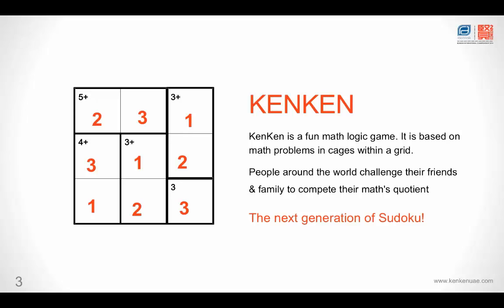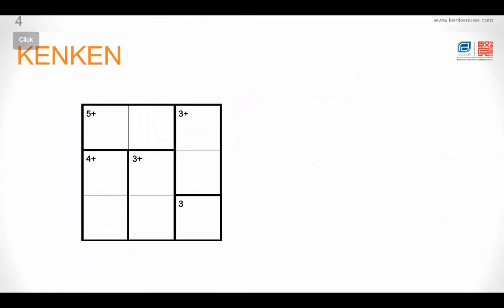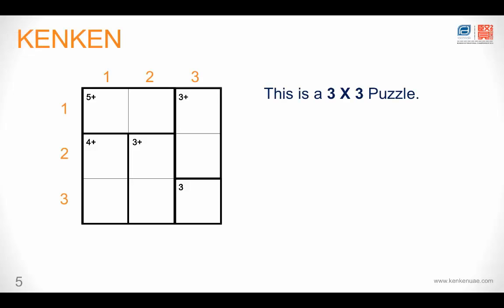So let's look at how to play a KenKen Puzzle. The first thing you do when you see a KenKen Puzzle is try and figure out what kind of a KenKen Puzzle it is. This one here is a 3x3 puzzle. The reason being it has 3 boxes on the top and 3 boxes on the side. If there were 4 boxes on the top and 4 boxes on the side, we would have called it a 4x4 KenKen Puzzle.